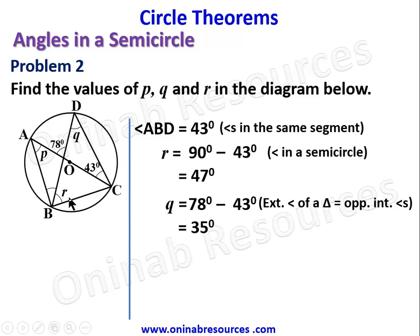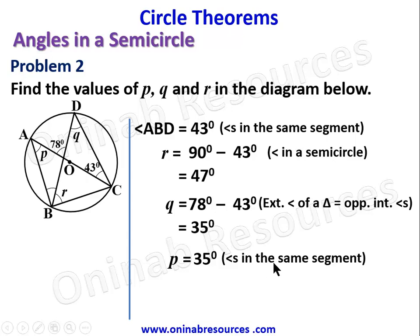From here we find P. P equals 35 degrees — angles in the same segment. We have already established that P and Q are in the same segment. That's the end of the solution to problem two.